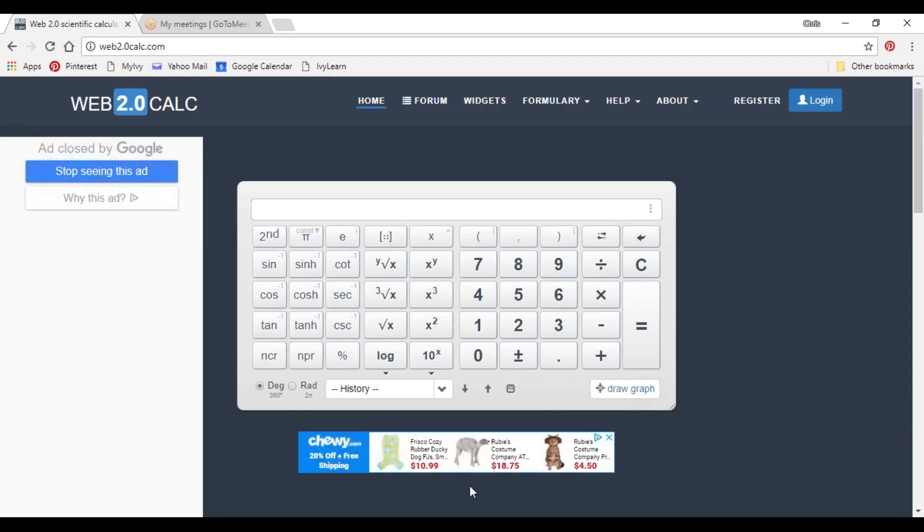If you have a multi-view calculator, you might be able to enter this all in one statement. Using the parentheses, 6.08 times 1 plus 0.0126, and then we want to raise that whole thing - this button here, x to the y, or on your calculator it might look like a carat - to the power of 12.